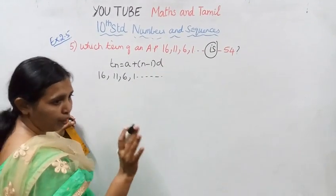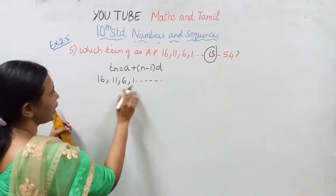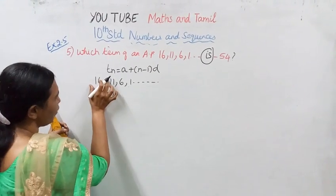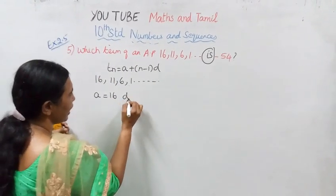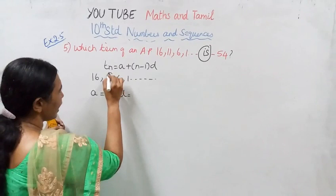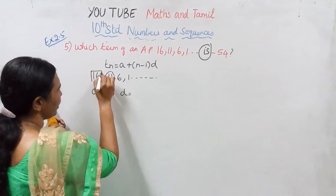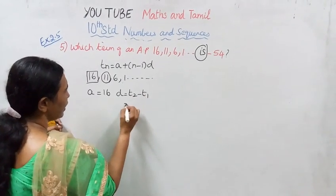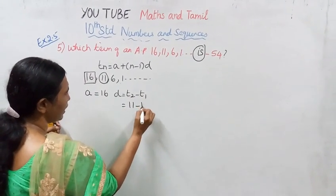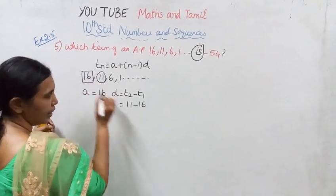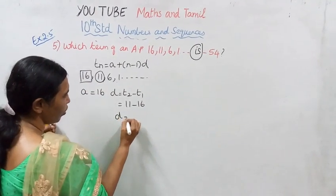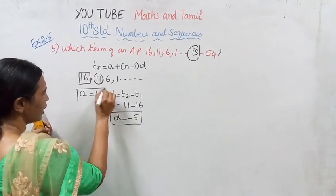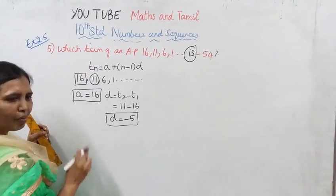First we need to know what we have. A is the first term, which is 16. D is the second term minus first term. T2 minus T1. 11 minus 16. That is equal to D equal to minus 5. So A is 16, D is minus 5.